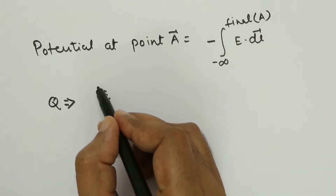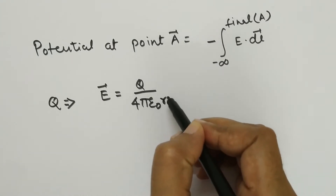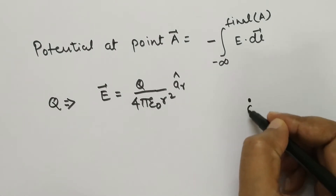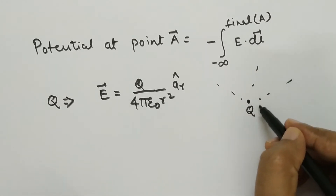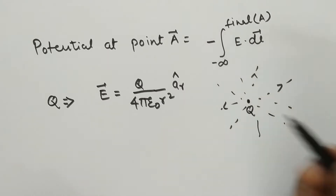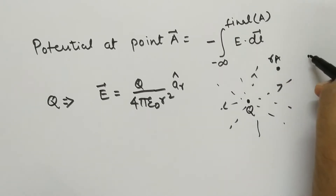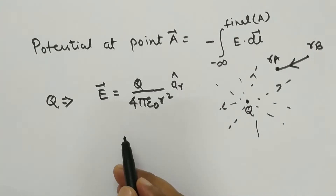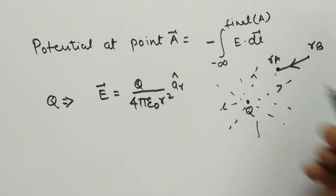For a point charge, the electric field intensity is given as E equals Q divided by 4π epsilon-naught R-squared, in the direction of A_R. If the charge Q is positive, the electric field direction is away from the charge. Now consider two points: one at distance RA and another at distance RB, with movement from RB to RA.